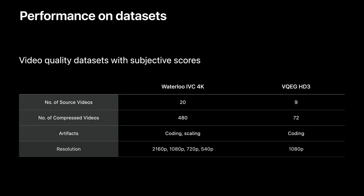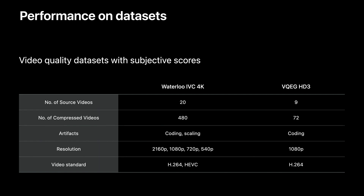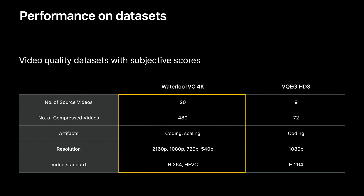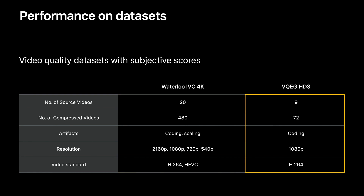We wanted to test AVQT's perceptual accuracy on a diverse set of videos, so we evaluated it on publicly available video quality datasets. These datasets include source videos, compressed videos, and video quality scores provided by human subjects. We will show results on two datasets: Waterloo IVC 4K and VQAG HD3. The Waterloo IVC dataset includes 20 source videos and 480 compressed videos, spanning both coding and scaling artifacts, covering four different video resolutions and two different video standards. The VQAG HD3 dataset has nine source videos and 72 compressed videos generated using video coding at 1080p resolution.